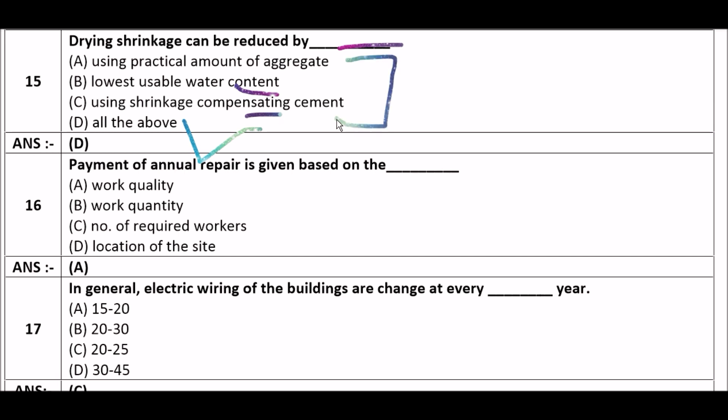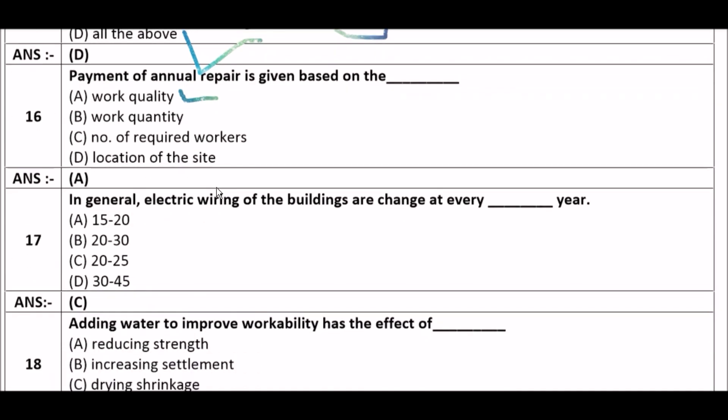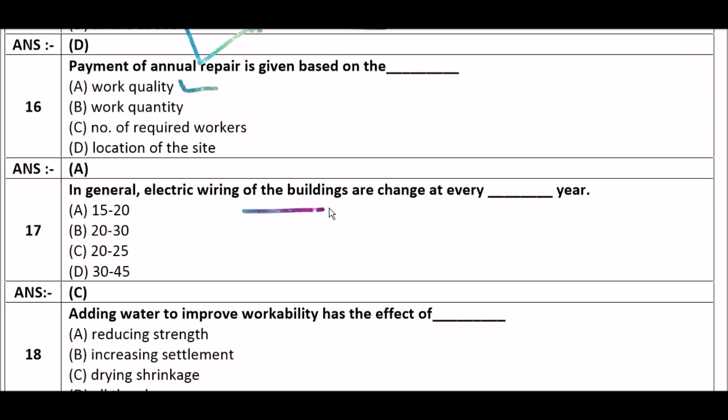Next question: Payment of annual repair is given based on — option A: work quality, option B: work quantity, option C: number of required workers, option D: location of the site. The right answer is option A, work quality. Payment of annual repair is given based on work quality.